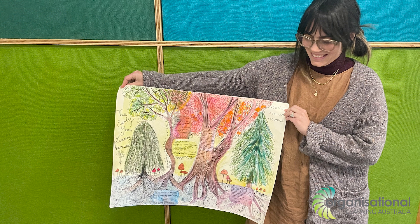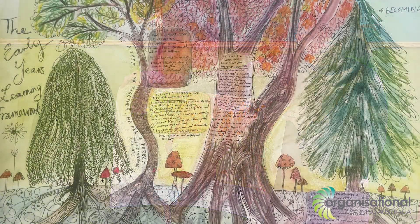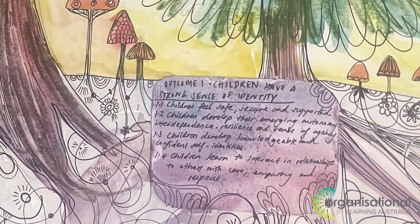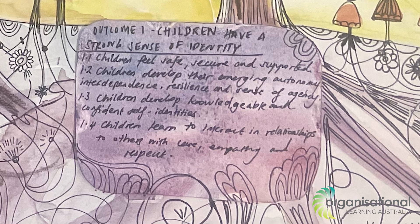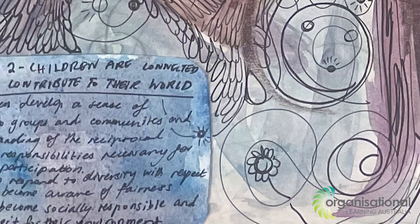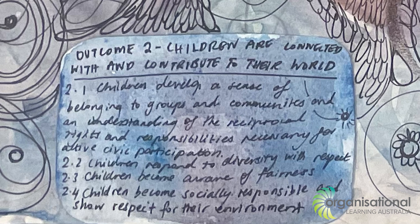Now Alana — what she's done is she's drawn this beautiful picture. When you really hone in, outcome one, children have a strong sense of identity, that's down in the roots. That's where the forest is all connected and where people know their place. Outcome two, children have a connection to their world — this is the soil and the substance that connects all those roots together.